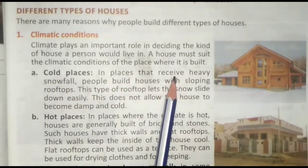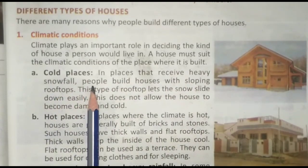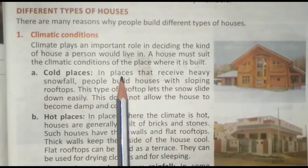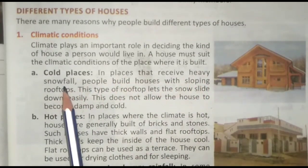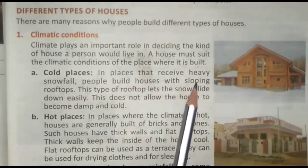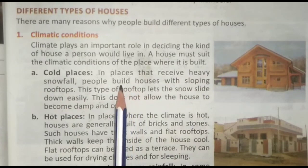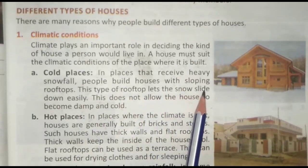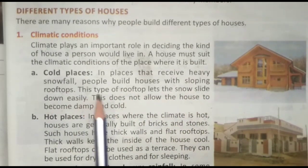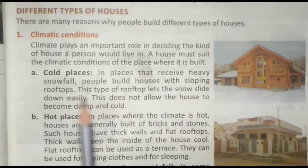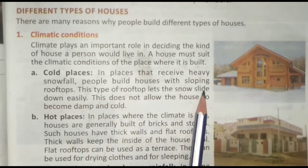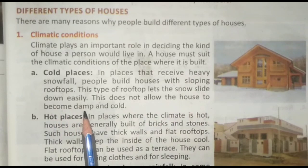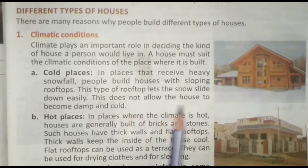Cold places — ठंडे स्थान। In places that receive heavy snowfall, people build houses with sloping rooftops. जिन स्थानों पर भारी बर्फबारी होती है, वहां लोग ढालू छतों वाले घर बनाते हैं। This type of rooftop lets the snow slide down easily — इस प्रकार की छतें बर्फ को आसानी से नीचे गिराती हैं।